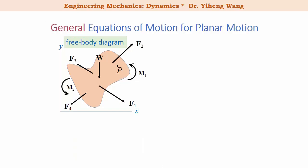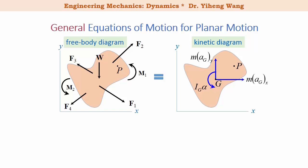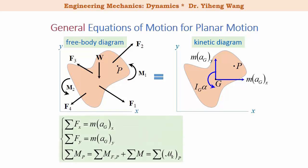For a rigid body with a given free body diagram undergoing general plane motion, we can draw its equivalent kinetic diagram with linear accelerations aGx and aGy at its gravitational center G, and the angular acceleration alpha for the entire rigid body. We can write a system of three scalar equations similar to equilibrium equations. The resultant force along x equals m times aGx, the resultant force along y equals m times aGy, and the resultant moment about any arbitrary point P equals the kinetic moment about point P.